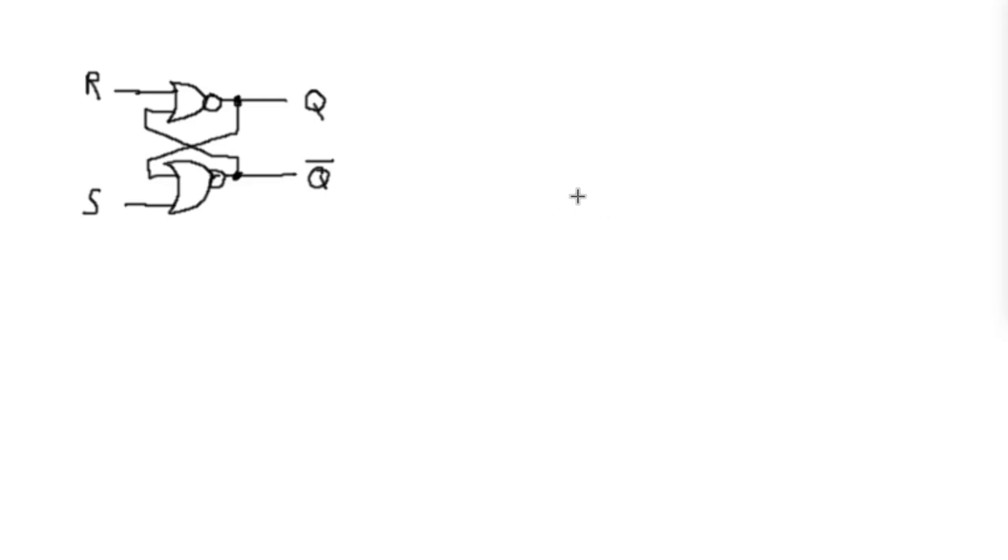The easiest way to do that is to simply take a buffer. Now, if you think back to just a buffer, and this can just be a regular old buffer, so one input, one output, this will basically take the input and forward it to the output. So if A is a 1, Q is a 1, and if A is a 0, Q is a 0. So we can take this buffer here, and we can actually feed its output right back to its input.